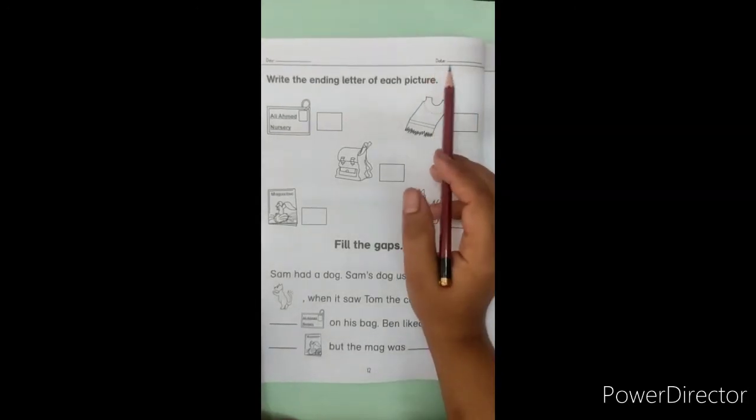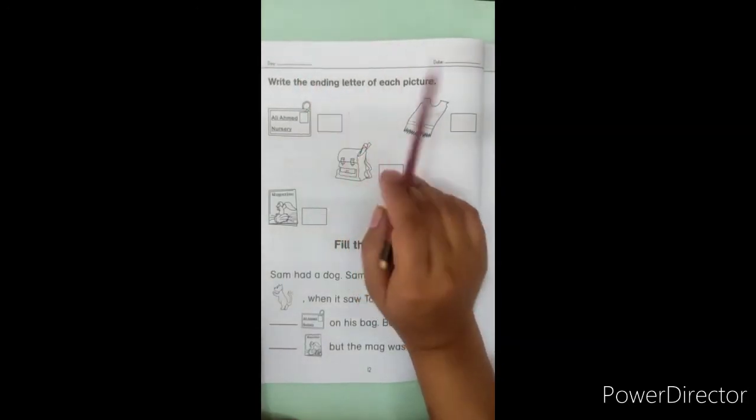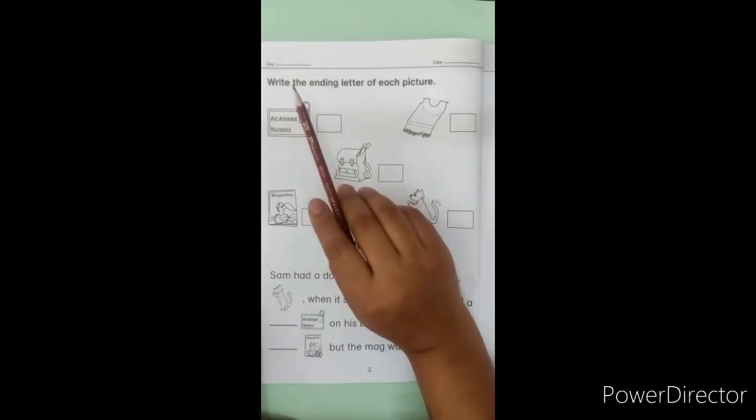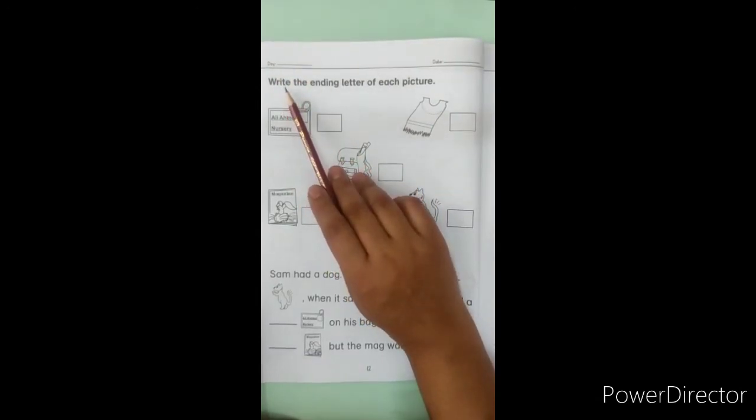Jis din aapne kaam karna hai, the day you have to work, write it here and the date write it here. Okay? Date, tariq yahaan likhni hai. Day, din yahaan likhna hai. Now read the caption after me.